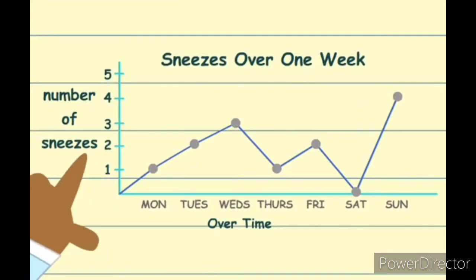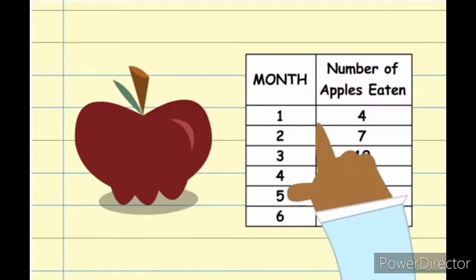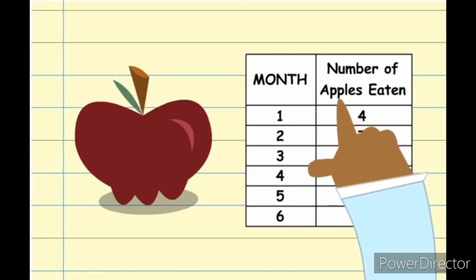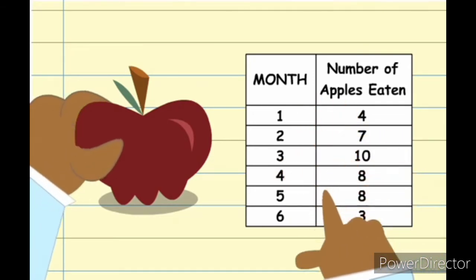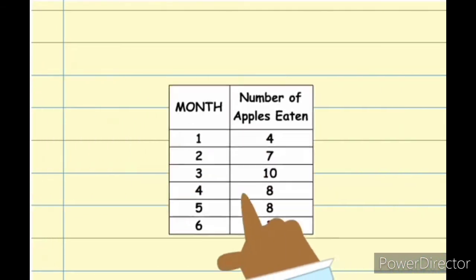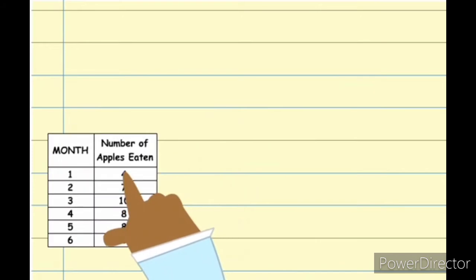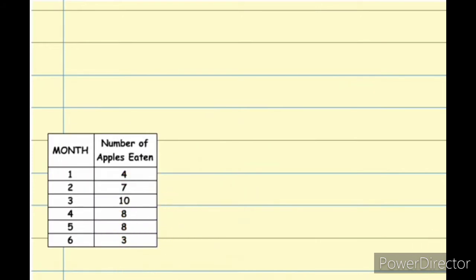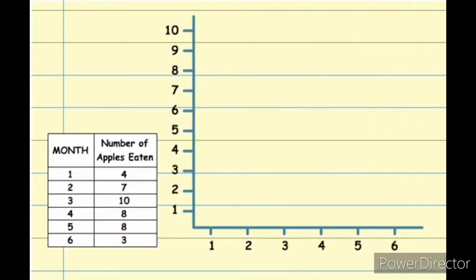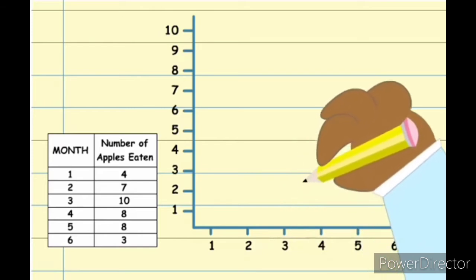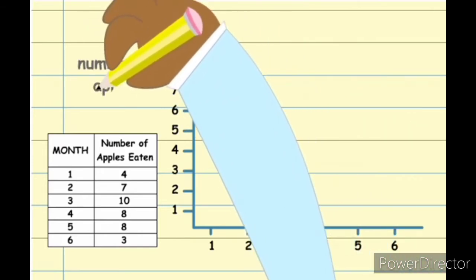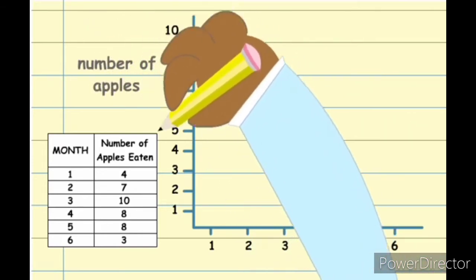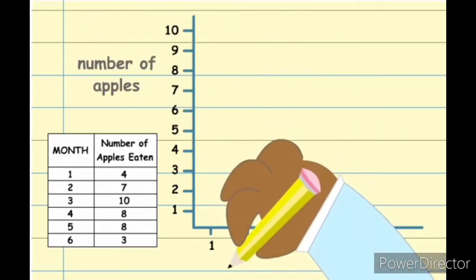A line graph, for example. This is the data of eating an apple for each month. Remember, data is the information you collect in an investigation. Let's make a line graph by labeling the data. After I add a label, I can begin to plot the data.